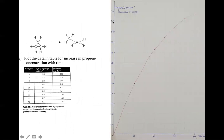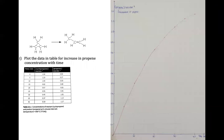This graph is called the concentration-time graph, for obvious reasons. You have concentration on the y-axis and time on the x-axis, so it's quite obvious why it's called a concentration-time graph. This is a concentration-time graph of a product.